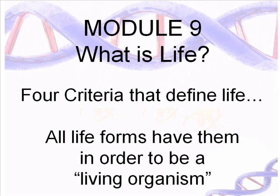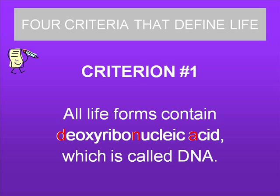In this module, we'll look at four criteria that define life. All life forms have to have each and every one of these in order to be considered a living organism. The first of these four criteria states that all life forms contain deoxyribonucleic acid, which is called DNA.